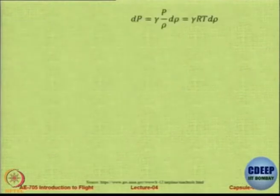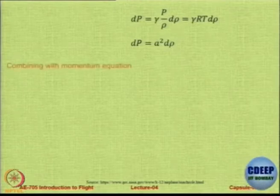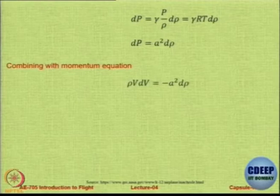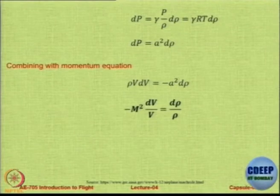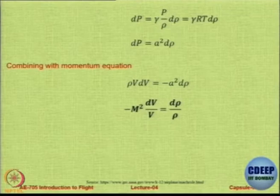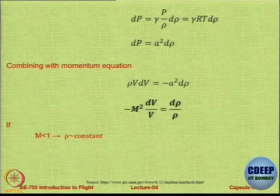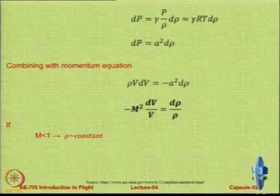So you can use that. So dP is a squared d rho, and therefore if you combine with the momentum equation — where rho V dV was minus dP — rho V dV is equal to minus a squared d rho, from which you can get M squared dV by V is equal to d rho by rho. This is not to be derived or memorized. This is just to tell you the link that Mach number gives us between velocity and density — that is the whole purpose of this small derivation.